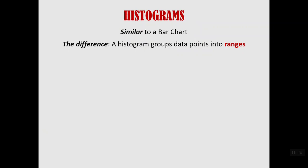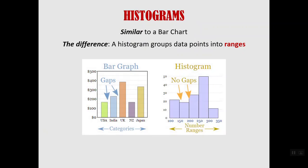A histogram is a type of chart that shows data visually. It's very similar to a bar chart, but the difference is that a histogram groups data into ranges.